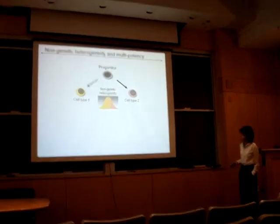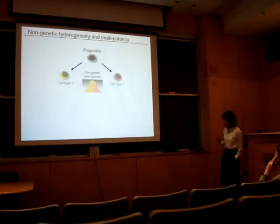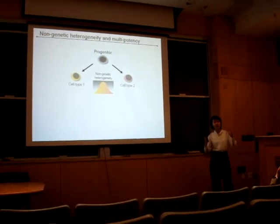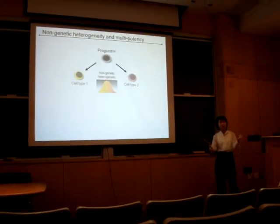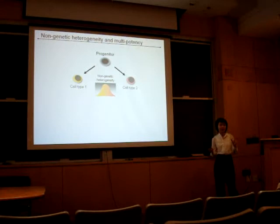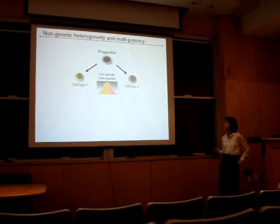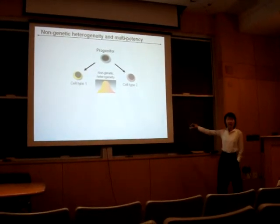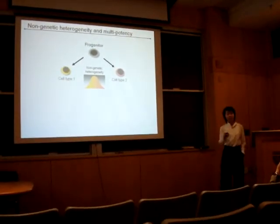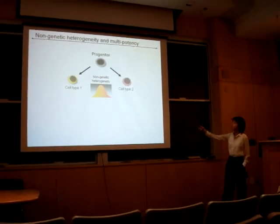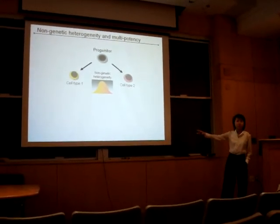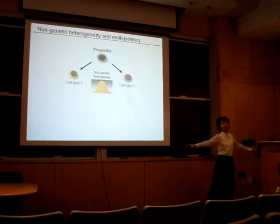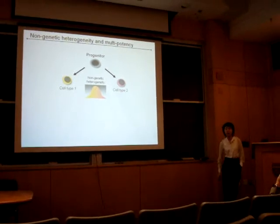At this point, what these results suggest is that we may be able to use non-genetic heterogeneity to basically unite these two different models. If we place non-genetic heterogeneity back into the picture and simply consider that within a progenitor population, there may already be a spectrum — a spectrum of differentiation potential.